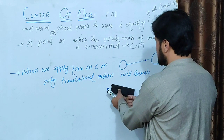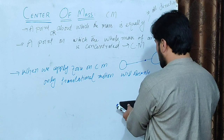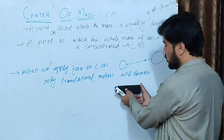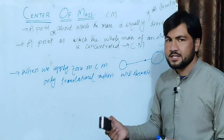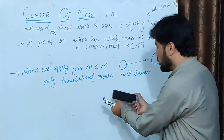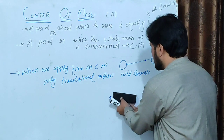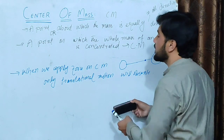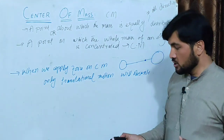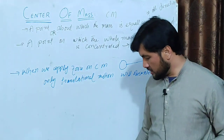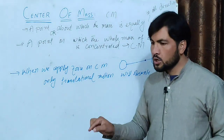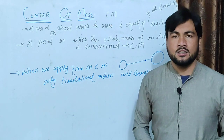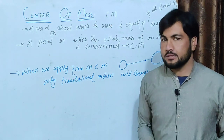If you have the force applied at the center of mass, the object undergoes translational motion. If the force is applied at the center of mass, you can have rotation as well. At that same point, if you apply force, you can have translational motion.